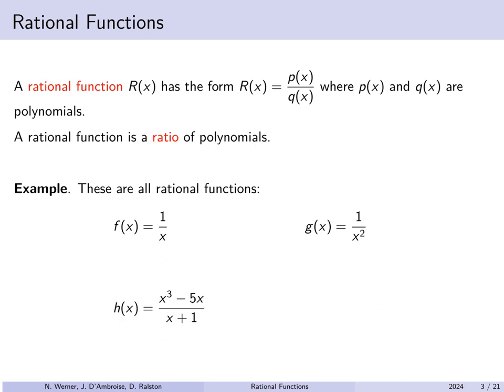H of x equals x cubed minus 5x over x plus 1. The numerator x cubed minus 5x is a polynomial of degree 3. The denominator x plus 1 is linear, in other words a polynomial of degree 1. And K of x equals x squared minus 1 over x minus 1. The numerator is a polynomial of degree 2 and the denominator a polynomial of degree 1.